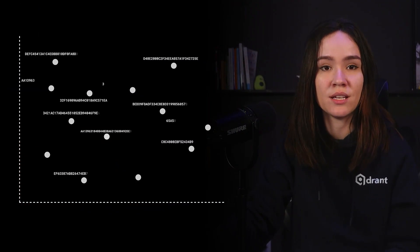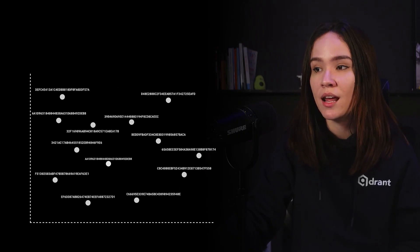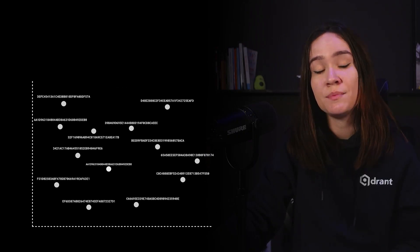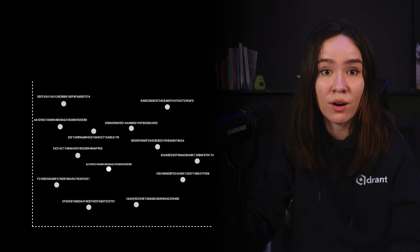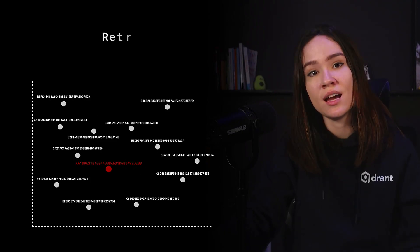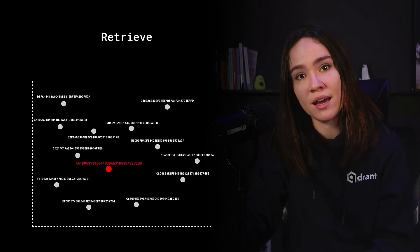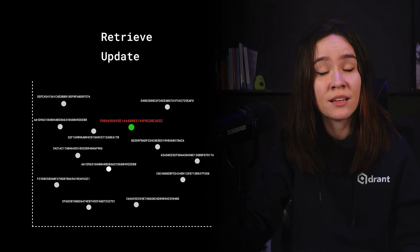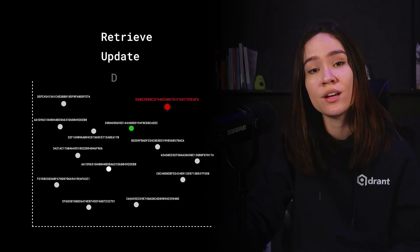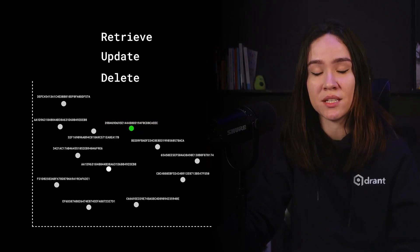Starting by explaining a bit about the ID, which is a very important piece of your point. Every point within Quadrant has an associated ID with it. This ID keeps track of the individual vectors within Quadrant, and you can use the ID to retrieve a vector, update your vector, or delete a specific vector.